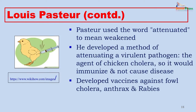Louis Pasteur used the word 'attenuated' for the first time to mean weakened. He developed a method of attenuating a virulent pathogen — the agent of chicken cholera — so it would immunize the chicken without causing disease, and started immunizing chickens to prevent the disease. He later developed vaccines of more human impact, developing the anthrax and the rabies vaccines.